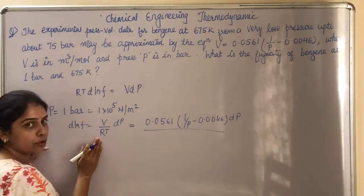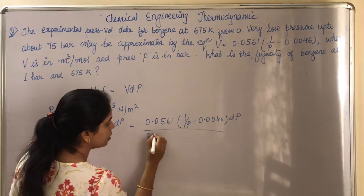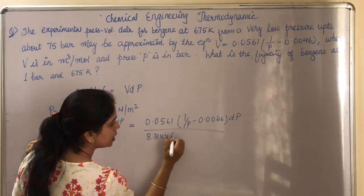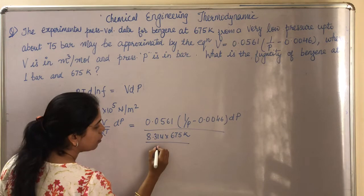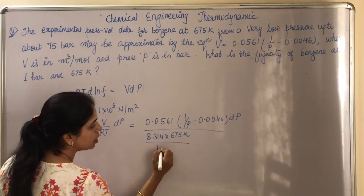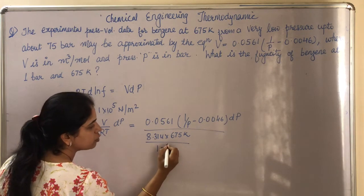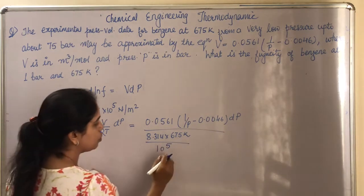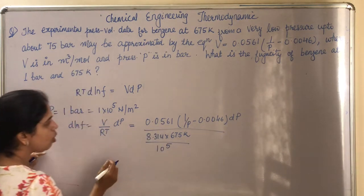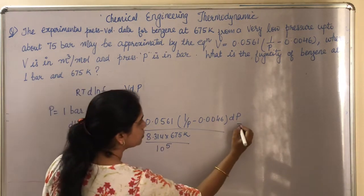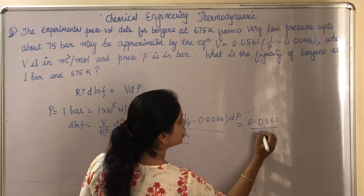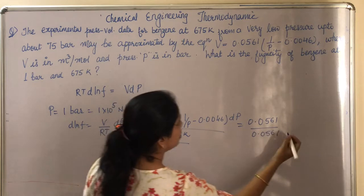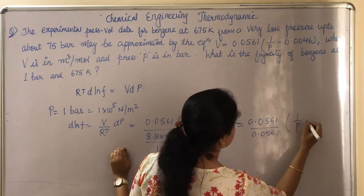So R is 8.314 times 675 Kelvin, which is constant, and here P is 1 × 10⁵ N/m². When you solve this, you will get 0.0561/(8.314 × 675 × 10⁵) × (1/P - 0.0046) dP.